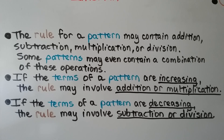The rule for a pattern may contain addition, subtraction, multiplication, or division. Some patterns may even contain a combination of these operations. If the terms of a pattern are increasing, the rule may involve addition or multiplication. And if the terms of a pattern are decreasing, the rule may involve subtraction or division.